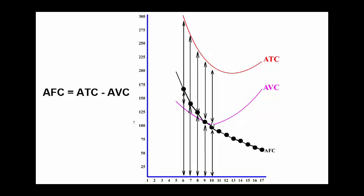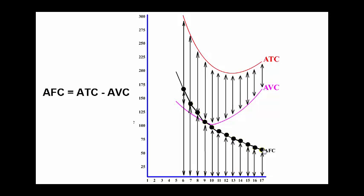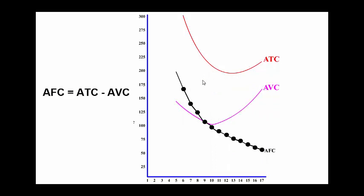And so again, the formula for AFC is ATC minus AVC. So we can take this average fixed cost curve out of here on every single graph and just have the ATC and AVC curves on this graph and be able to figure out the AFC.